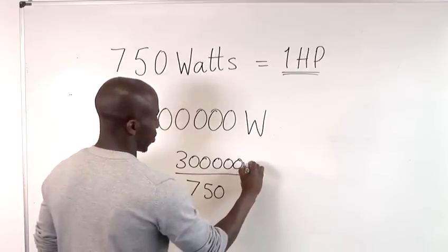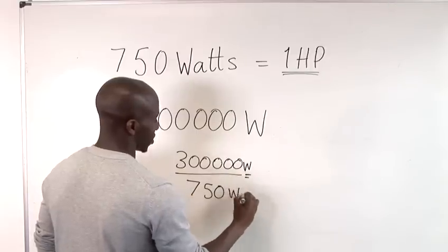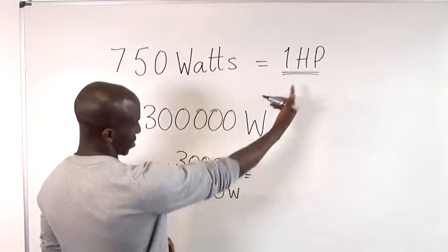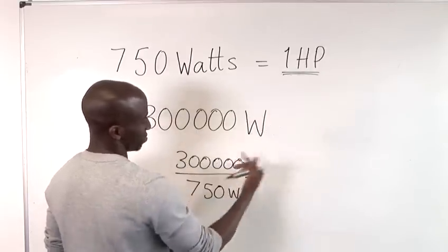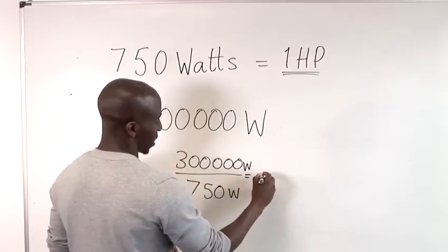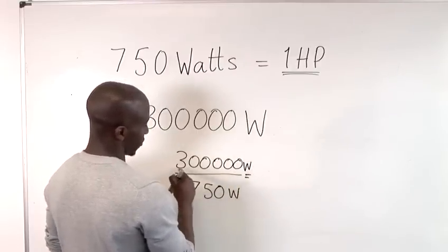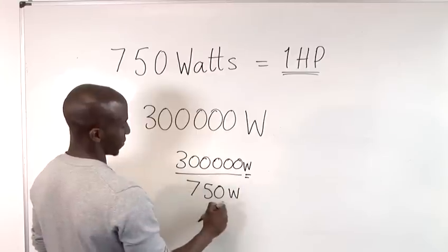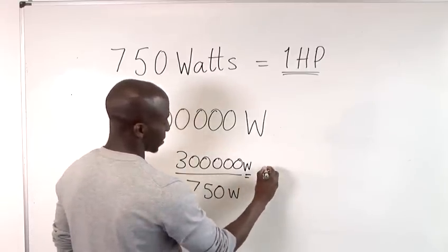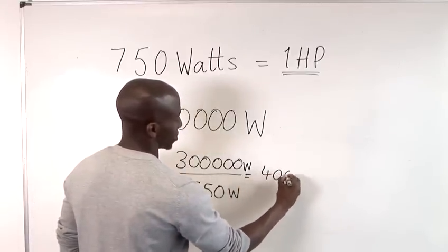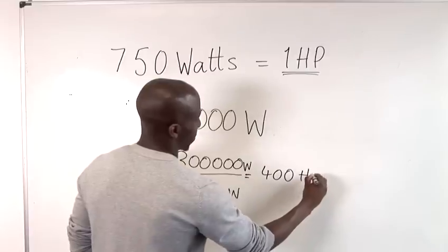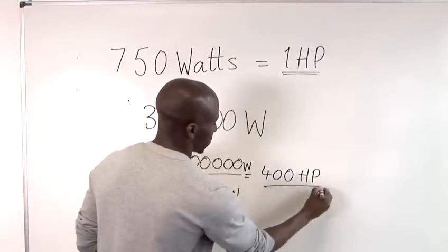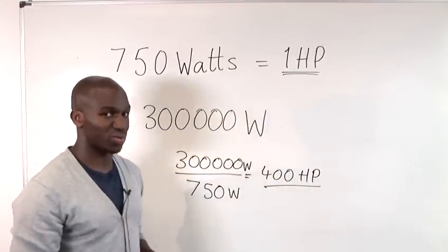We would have watts here and watts here, and obviously our horsepower is just the equivalence of that. So, 300,000 divided by 750 comes up to 400 horsepower. That's how to calculate horsepower.